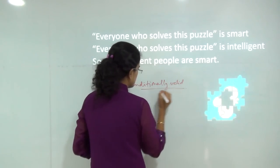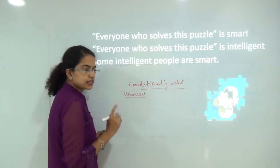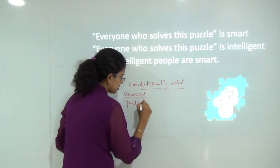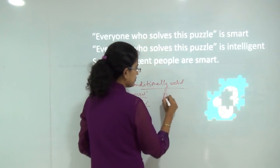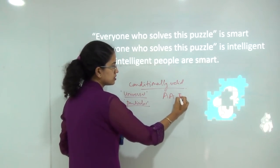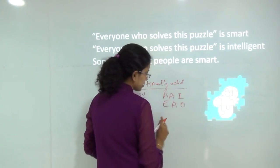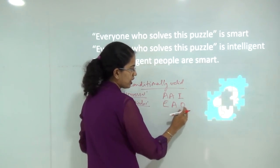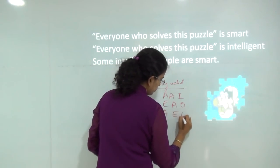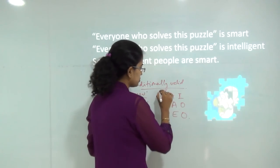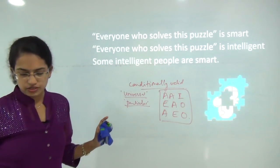The premises must be universal statements and the conclusion must be particular. The three cases of conditionally valid forms are: AAI (all, all, some), EAO (none, all, some-are-not), and AEO (all, none, some-are-not). These are the three cases of conditionally valid forms we will study today.